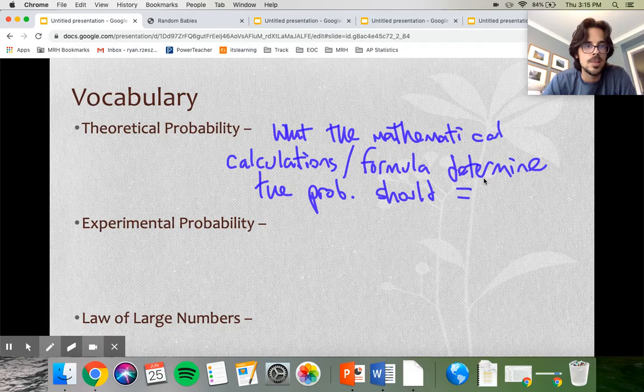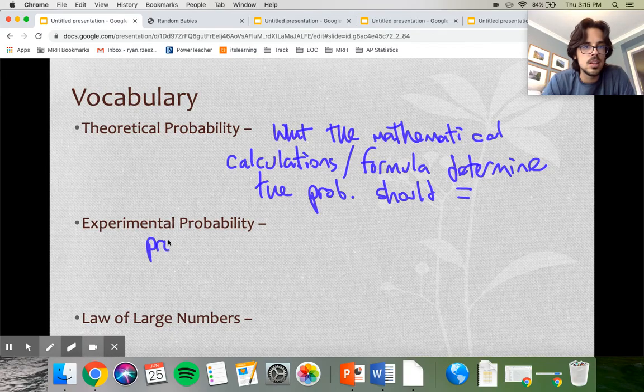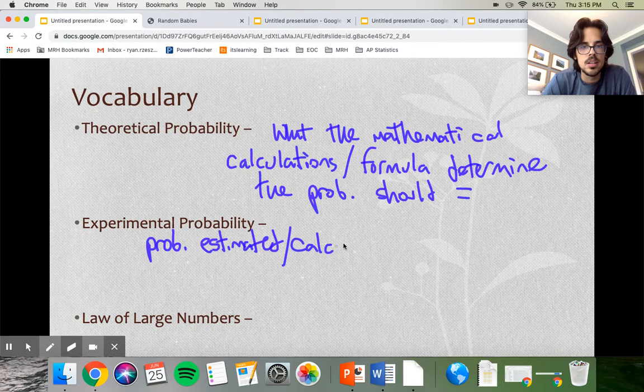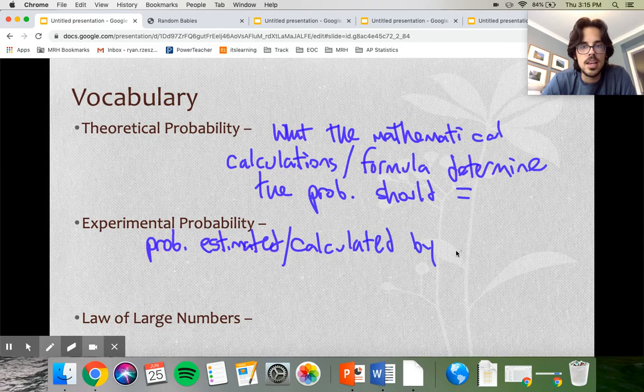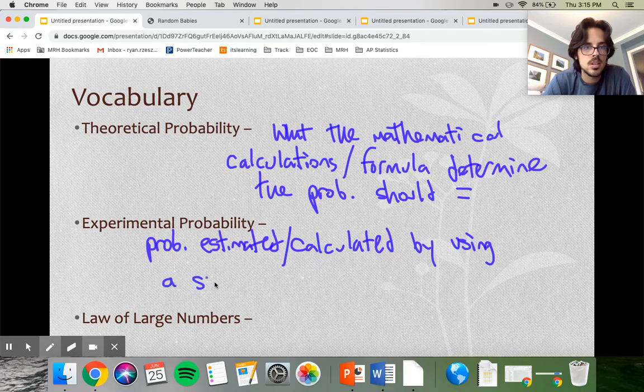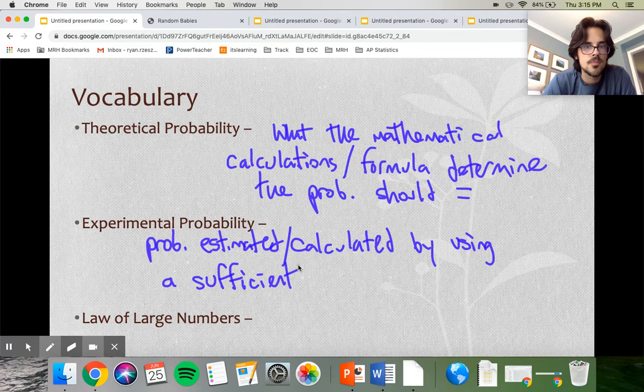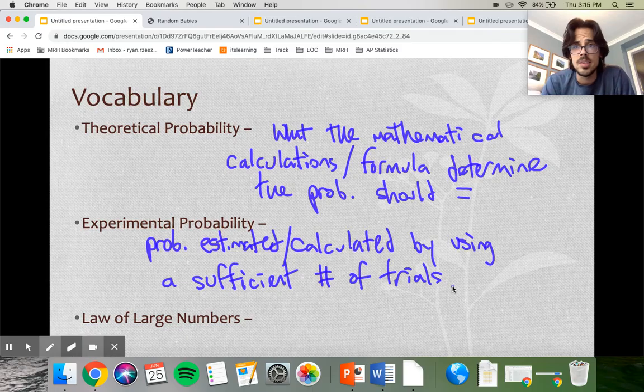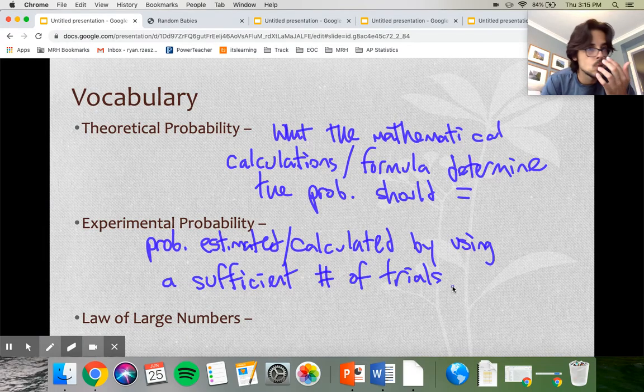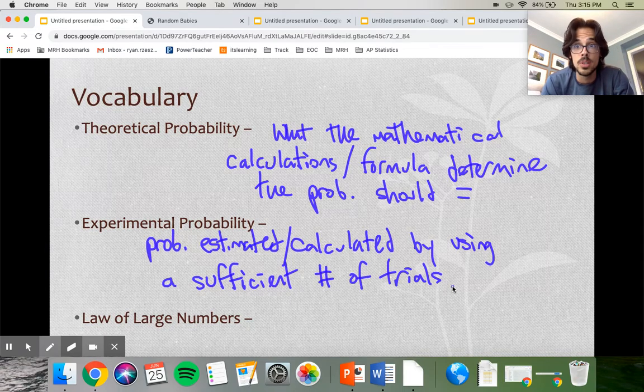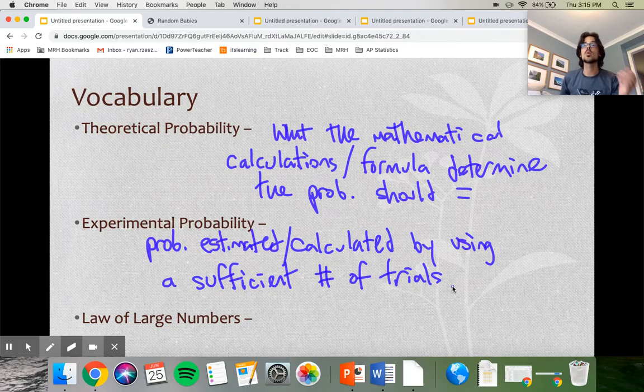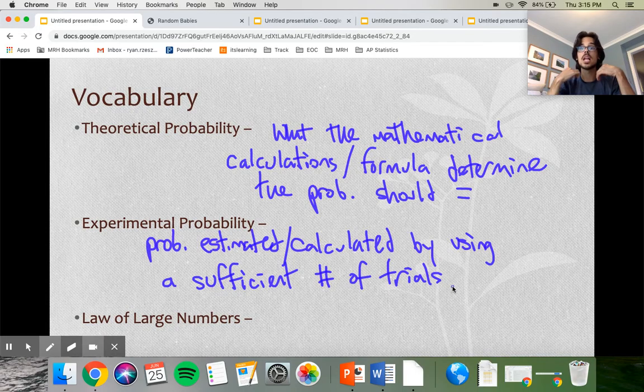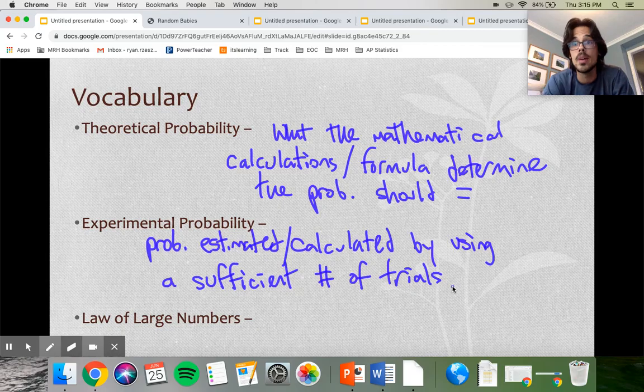Then we have experimental probability, which is probability calculated or estimated by using a large number of trials. If you're actually collecting data yourself for something that's not so easy to do, you would be finding an experimental probability. If I wanted to flip a coin and count the number of heads out of 100 flips, I get 53. My experimental probability of getting heads on a coin could be 53 out of 100. It does not have to match up with the theoretical probability, but if you do lots and lots of trials, it should level out at that value.